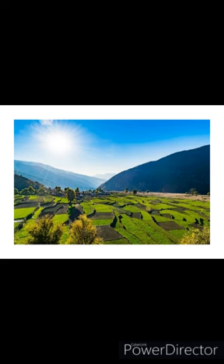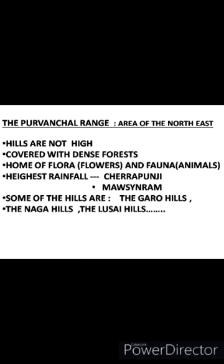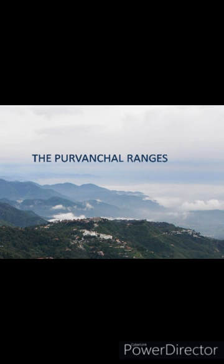Now we will look at the Purvachal ranges. The Purvachal range means eastern mountains, which covers the area of Arunachal Pradesh, Assam, Manipur, Mizoram, Nagaland, and Meghalaya. This Purvachal range is home to flowers and animals. It has two places which receive the highest rainfall: Cherrapunji and Mawsynram.